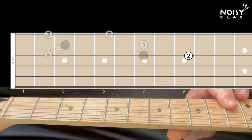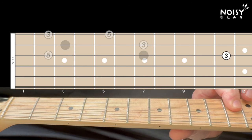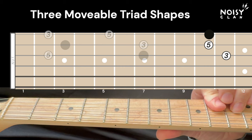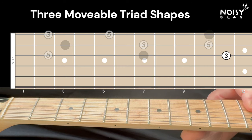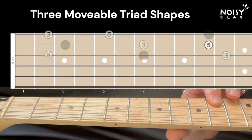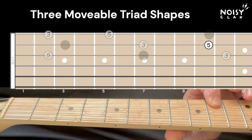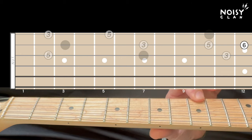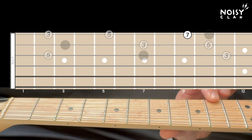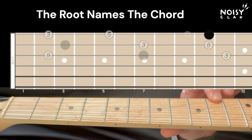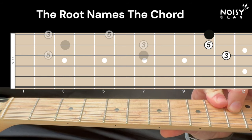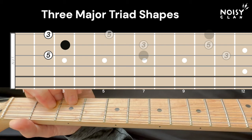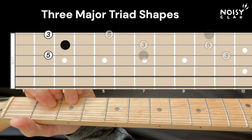Now building from the root on the third string, we have the next triad note, the third. From there we get the fifth. And the final root on that high E string, the D. So there we have three major triad shapes in the top three strings.